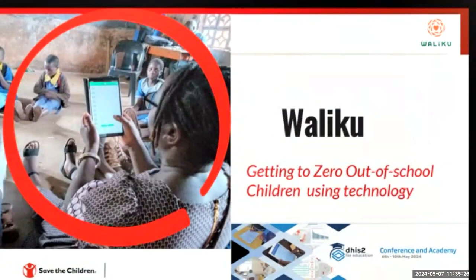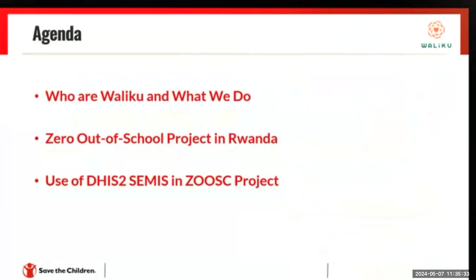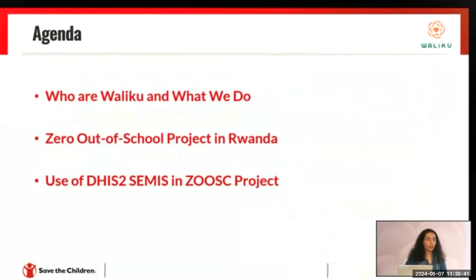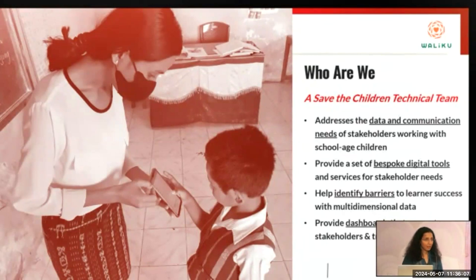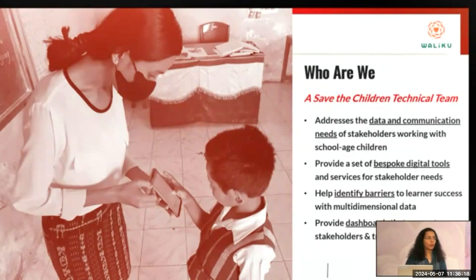When we talk about digitizing data, it's about what the purpose behind it is. Here we have a very ambitious goal. Before I get into the details of the project, I'd like to give you a brief overview of who we are, what we do, the zero out-of-school project, and then the use of DHIS2 CMS that you just saw demo'd in the project. We are a Save the Children team, and we provide bespoke digital tools for the needs of projects to address issues around communication and data for stakeholders who are working with school-aged children. This helps identify barriers in children's education, but also their health and other aspects of their learning journey.